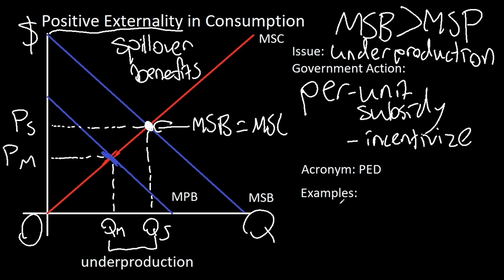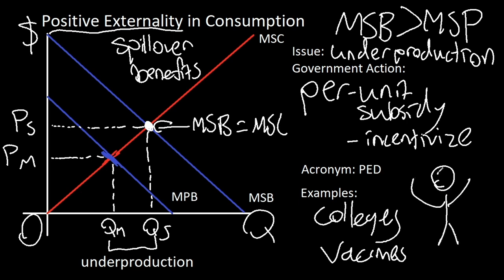Some examples of positive externalities in real life is colleges or vaccines, colleges for education, and vaccines for healthcare, which both of these help produce more healthy and productive citizens who are also less likely to commit crime and do stupid things and are essentially just better citizens. So it's a win-win for both the government and the people.